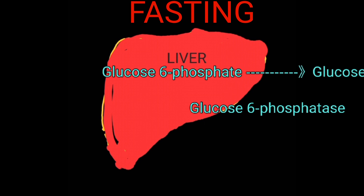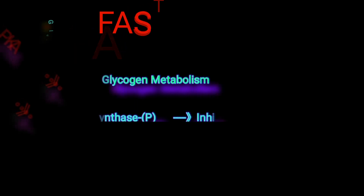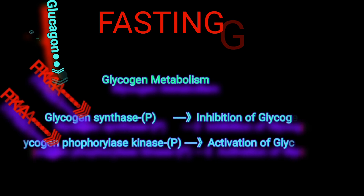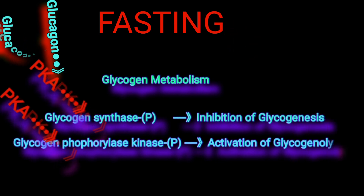Without this enzyme, glucose would not be produced from glucose-6-phosphate, and the result would be severe fasting hypoglycemia. In glycogen metabolism, PKA can phosphorylate glycogen synthase, and in doing so it inhibits the enzyme,